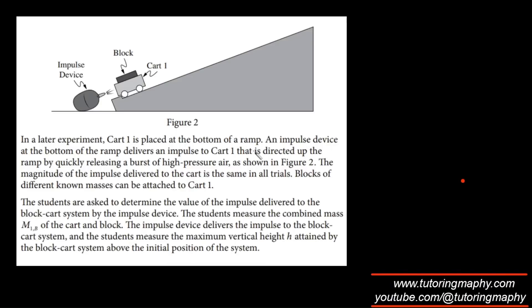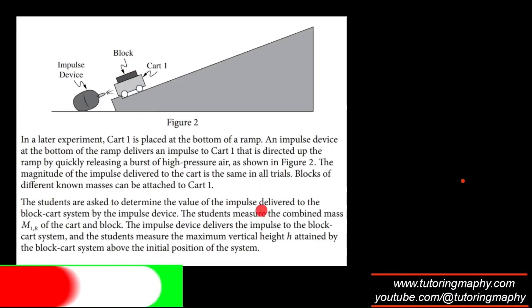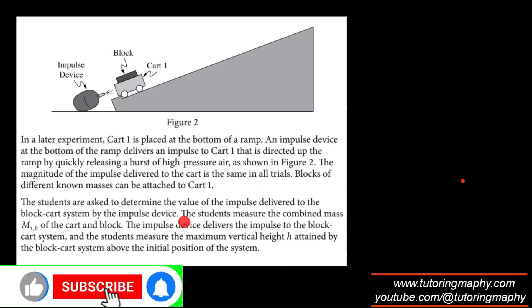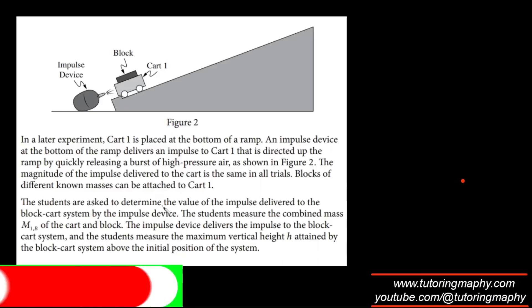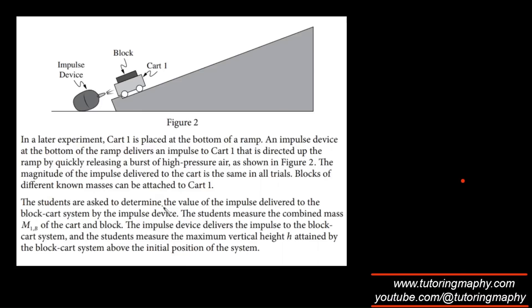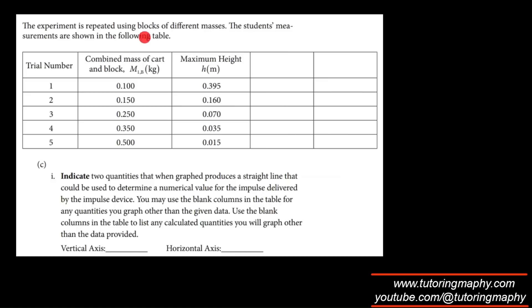In a later experiment, cart 1 is placed at the bottom of a ramp and an impulse device at the bottom delivers an impulse directed up the ramp by quickly releasing a burst of high-pressure air. The magnitude of the impulse is the same in all trials, and blocks of different known masses can be attached to cart 1. Students measure the combined mass M1B of the cart-block system and the maximum height attained, repeating this with blocks of different masses.